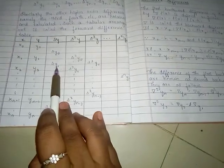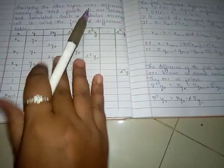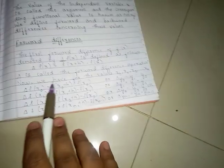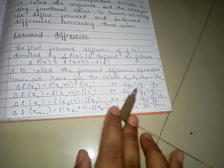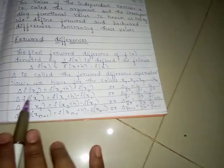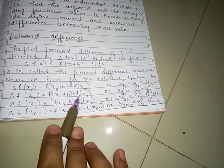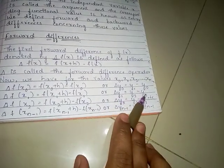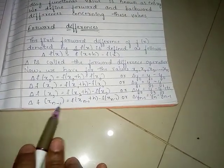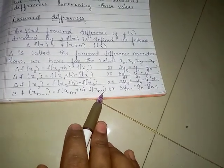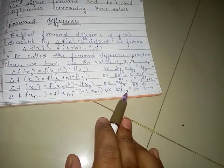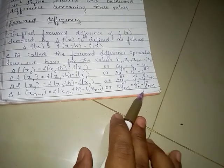Given x and y values, we find the first forward difference, second forward difference, and so on to the nth forward difference. The formulas are: delta y0 = y1 - y0, delta y1 = y2 - y1, and so on. That is, each first forward difference is the succeeding value minus the preceding value.